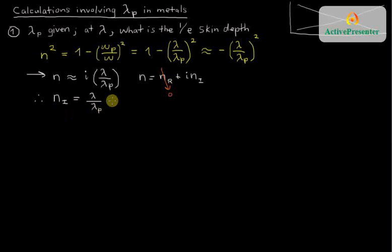So for example, we might be thinking about what light is doing at 500 nanometers, that would be our lambda. Lambda p might be on the scale of 100 nanometers. So this would give us a value of about 5. So n imaginary is 5, so the refractive index is 5i.